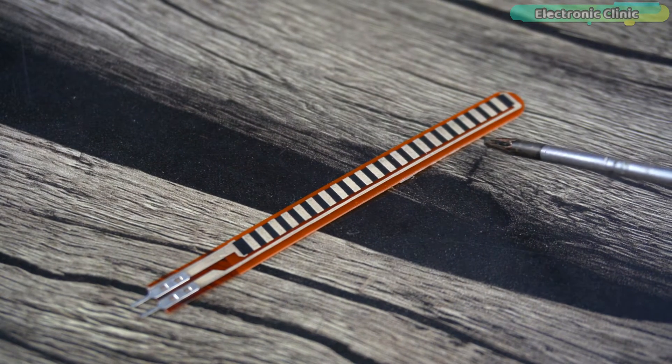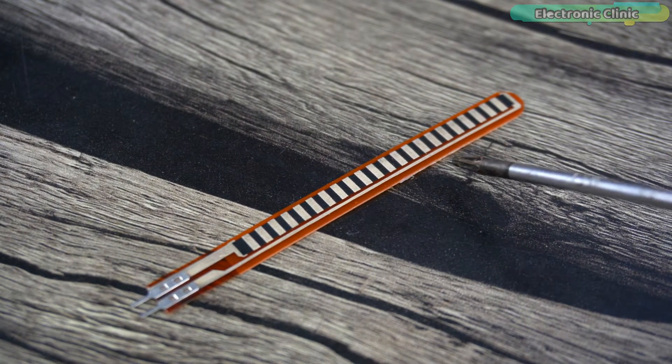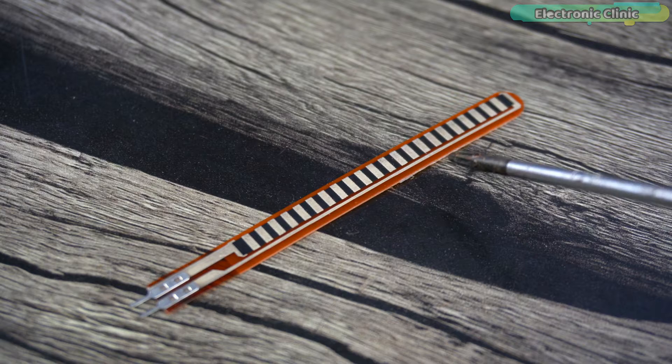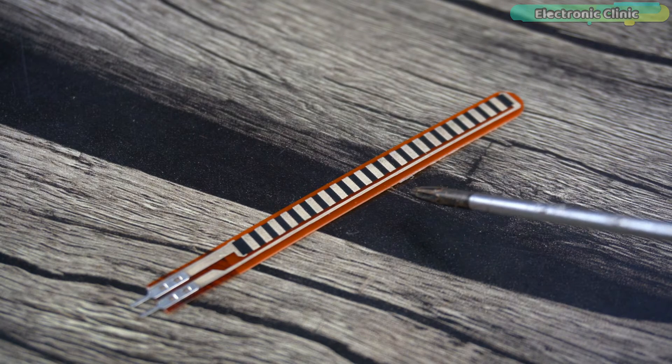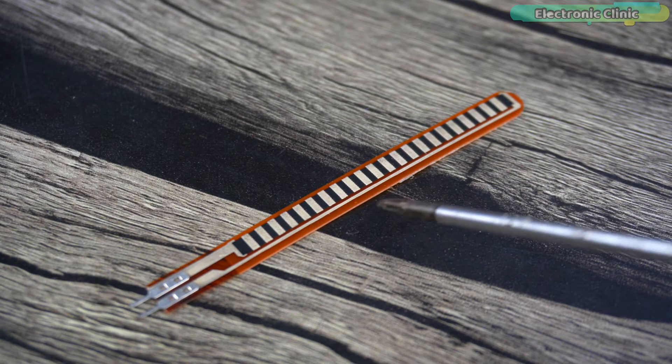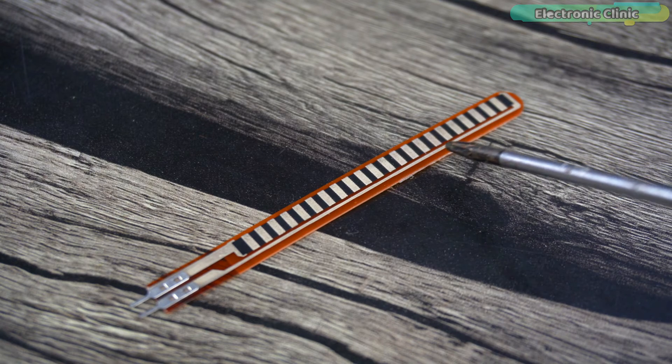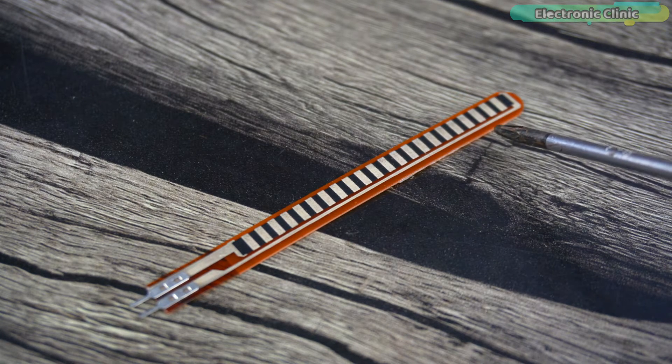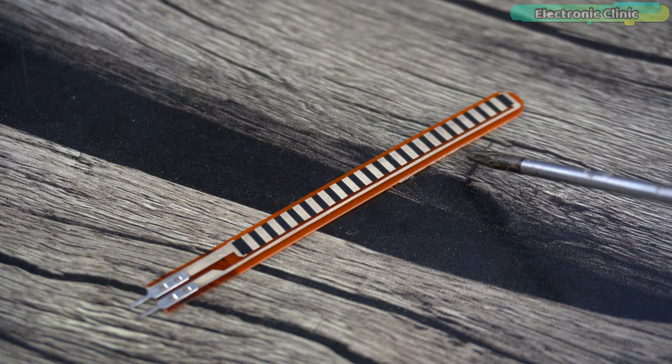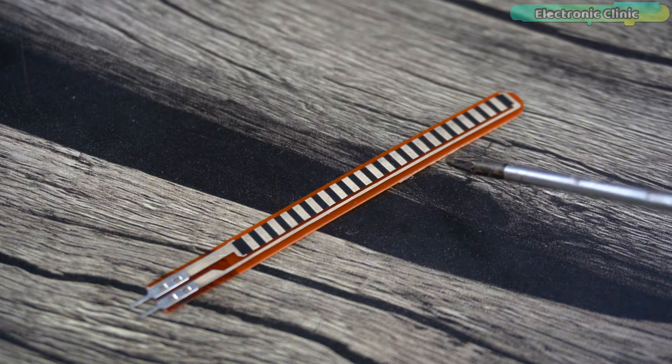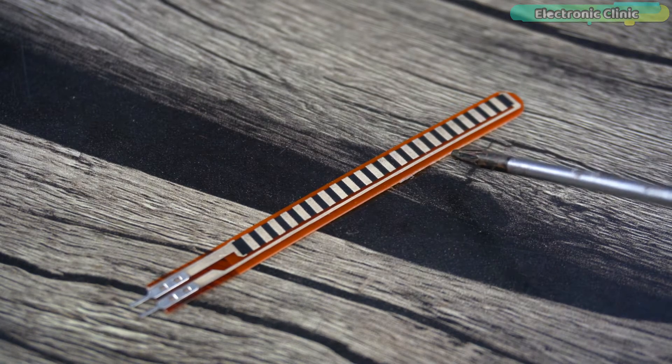A flex sensor typically consists of a flexible substrate, often made of materials like polyester or similar polymers, with conductive elements or traces applied onto their surface. These conductive elements are typically composed of materials with specific electrical properties that exhibit predictable changes in resistance as the sensor is bent.